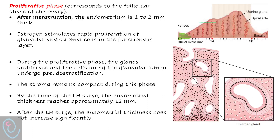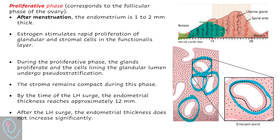Estrogen stimulates rapid proliferation of glandular and stromal cells in the functionalis layer. During the proliferative phase, the glands proliferate and the cells lining the glandular lumen undergo stratification. However, the stroma remains compact during this phase. By the time of the LH surge, endometrial thickness reaches approximately 12 mm and does not increase significantly after that.